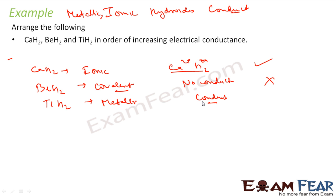Now the question is between TIH2 and CAH2. Since this is ionic, it has to be in the molten form or it has to be in the solution form to conduct, but this guy TIH2 can conduct in room temperature itself.